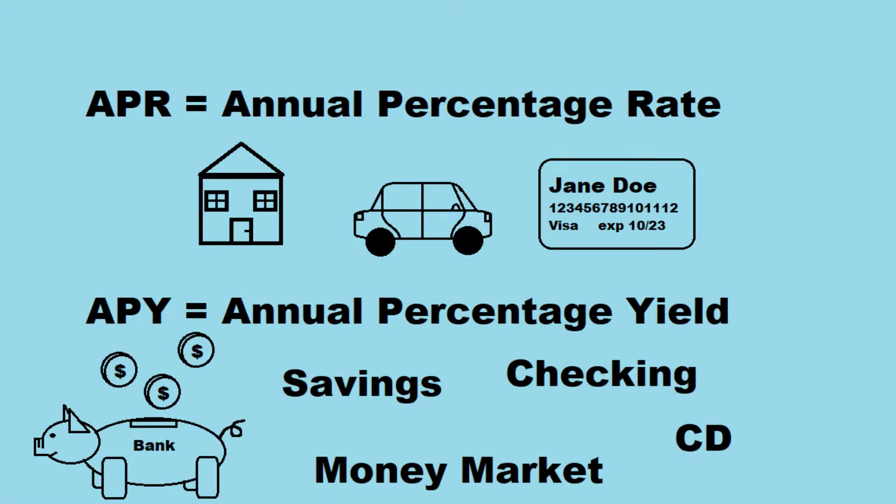APR is generally used whenever you're paying a debt — be that a mortgage, car payment, a credit card, student debt, anything like that. But APR is a smaller number compared to APY, so when you're taking out a loan, they want to make you think that you're not paying as much as you actually are.